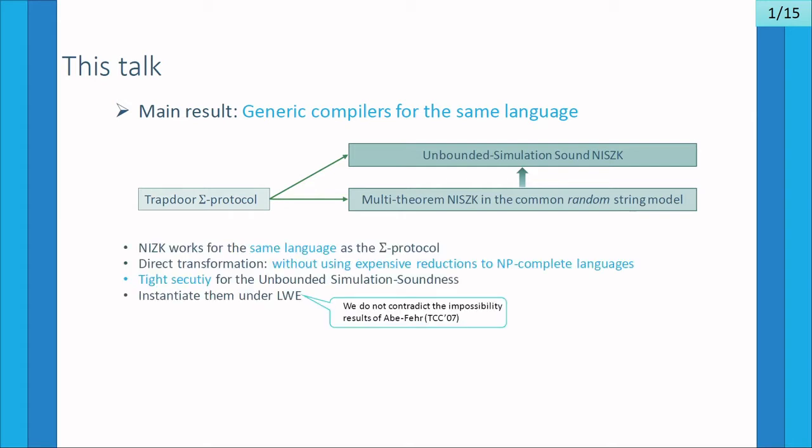A key feature of our transformation is that it works for the same language, in the sense that the resulting NIZK works for the same underlying language as the initial Trapdoor Sigma protocol. Our compiler is direct in the sense that it doesn't have to go through some expensive reduction to some NP-complete language. Moreover, we can make the security proof of the unbounded simulation soundness tight, so that the security loss of the reduction is independent of the number of queries that the adversary makes to the simulation oracle.